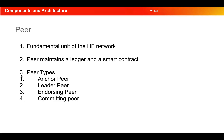There are different types of peers: anchor peer, leader peer, endorsing peer, and committing peer. Every organization must have one or more anchor peers so that those anchor peers can communicate with the anchor peers of other organizations using the gossip protocol. This is needed to know about the peers that are present in other organizations.